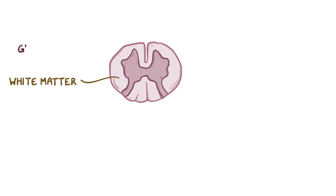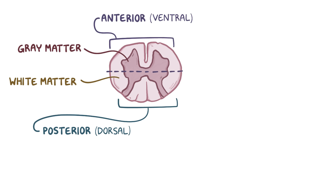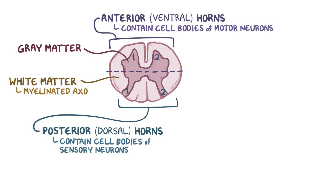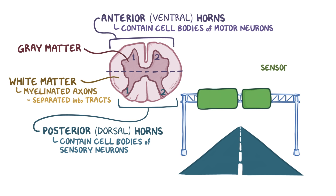If you look at the cross-section of the spinal cord, the white matter is on the outside and the gray matter is on the inside, and overall it looks kind of like a butterfly. The front half is the anterior or ventral half and the back half is the posterior or dorsal half. The butterfly wings are sometimes referred to as horns — two dorsal horns that contain cell bodies of sensory neurons and two ventral horns that contain cell bodies of motor neurons. The white matter consists of myelinated axons separated into tracts that carry information to and from the brain — like highways for neural signals, where some highways carry sensory information to the brain and some carry motor information from the brain to the muscles.